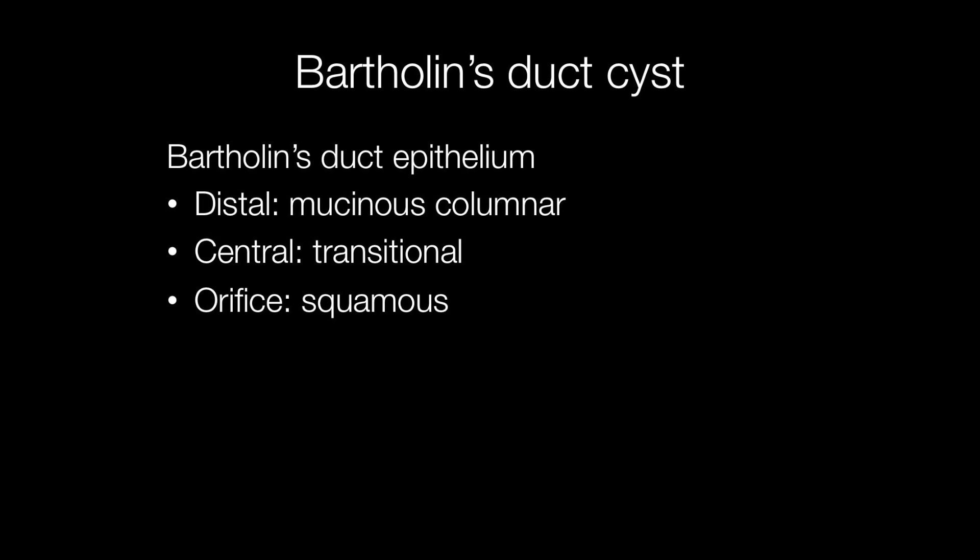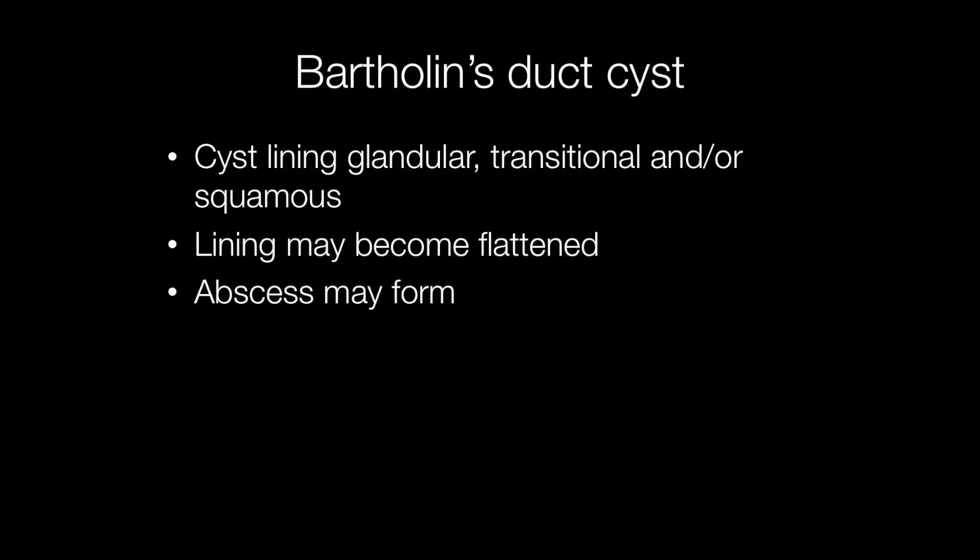In order to appreciate the types of lining that can be found in a Bartholin duct cyst, it is worth having a look at the duct itself to see what it is lined by. The distal part is lined by mucinous columnar epithelium, the central part by transitional epithelium, and the orifice by stratified squamous epithelium. So the cyst lining may be either one or a combination of glandular, transitional, or squamous epithelium.